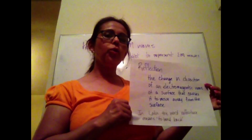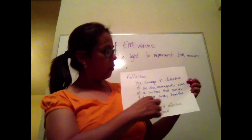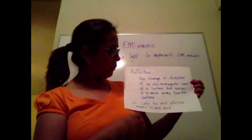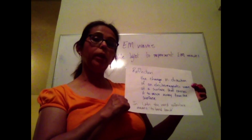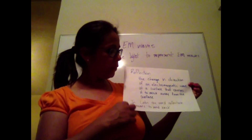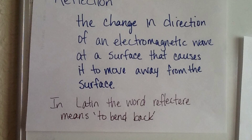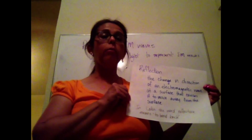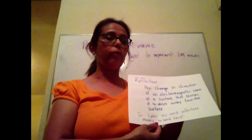Reflection is due to the change in position as the electromagnetic wave strikes the surface of whatever it is touching, and when it does this, it will produce some sort of image, depending on the surface type. In Latin, the word 'reflectere' represents 'to bounce back,' which is basically what happens. We're going to look at the different images that can be produced depending on the mirrored surface.